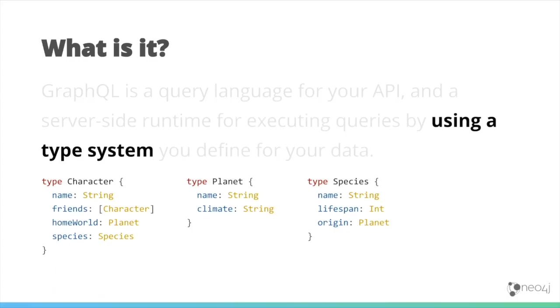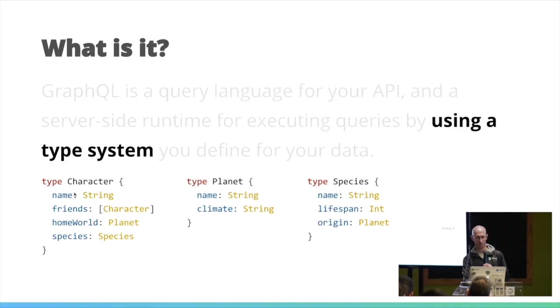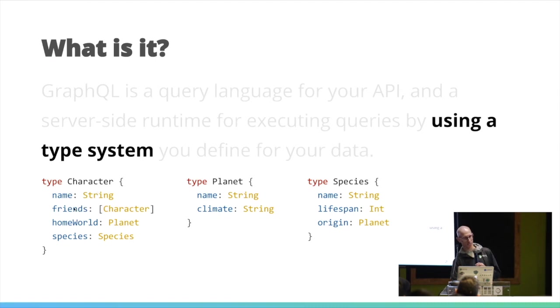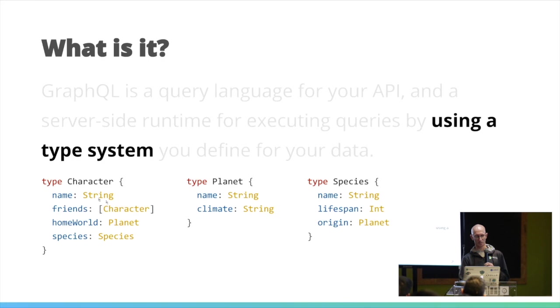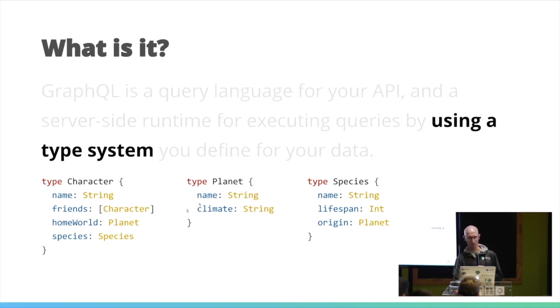We need to define a type system when using GraphQL. In this example type system, we're defining three things: a Character, a Planet, and a Species. You define key values saying what's in that particular type. A character has a name — that's a primitive string — but also an array of other characters who are friends, so that's a self-referential type. It also has a homeworld linking to the Planet type, and a species linking to Species. You define this at the beginning, it generates your schema, and you write queries against that schema.